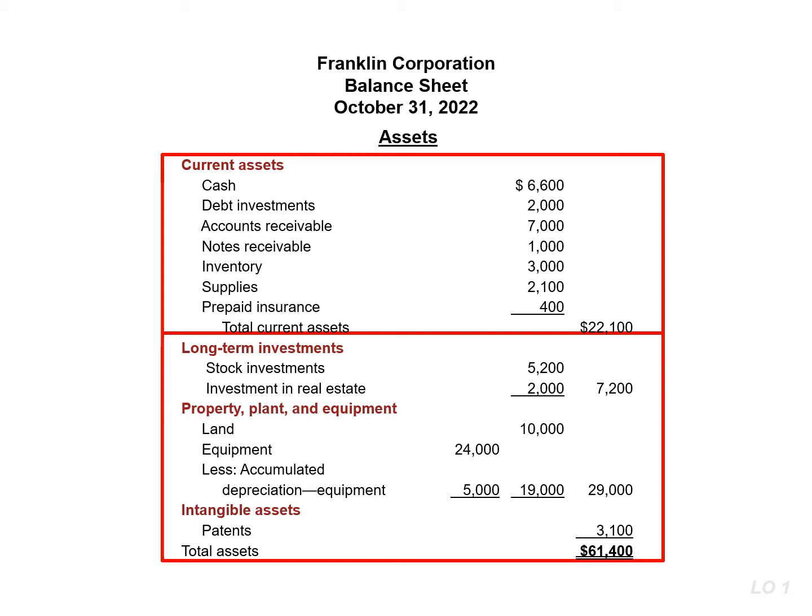Right now, I want you to think of an acronym or way to remember that we list current assets first, then our long-term investments, then property, plant, and equipment, and lastly our intangible assets.